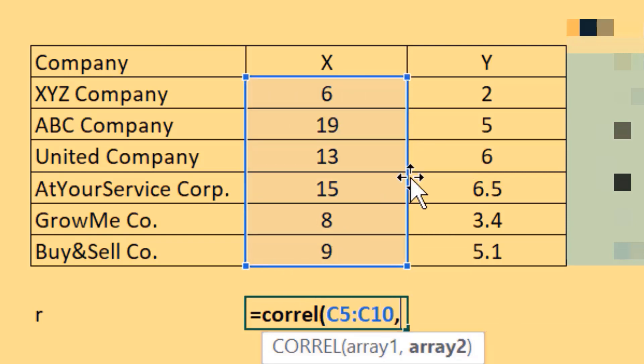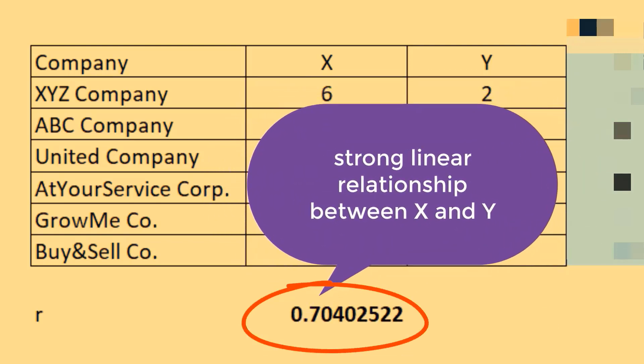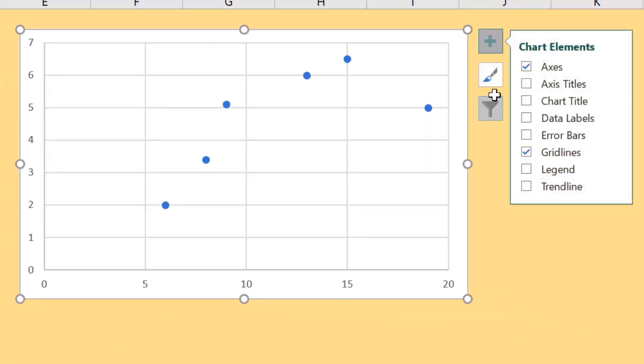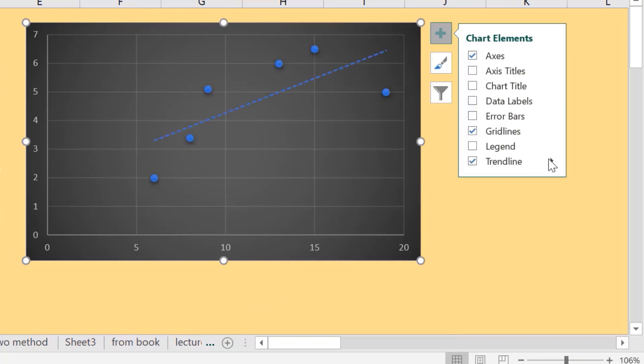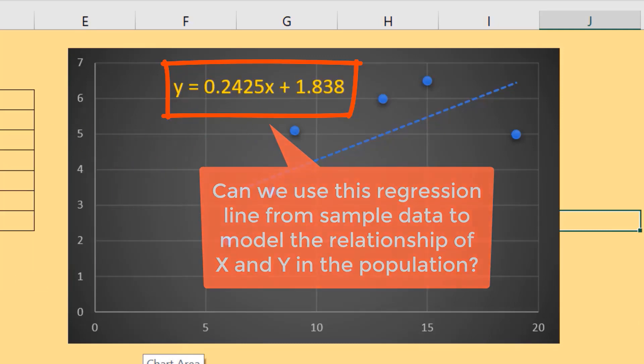Let's create a scatter plot showing also the regression line and regression equation. The regression equation is Y equals 0.2425X plus 1.83.